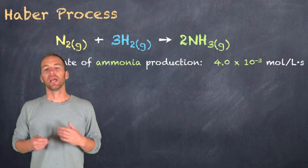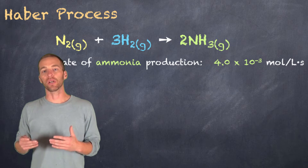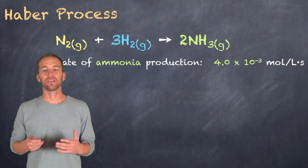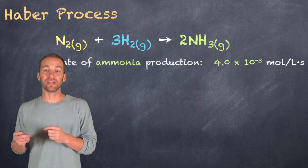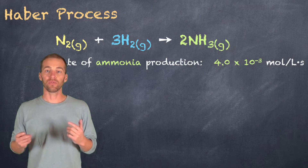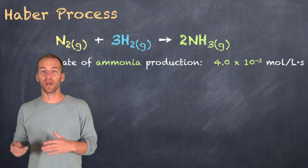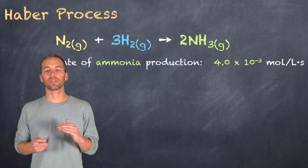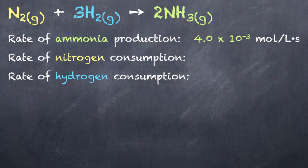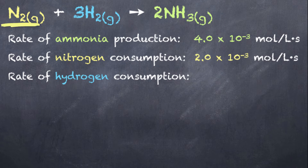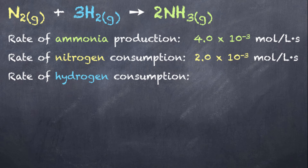If we know that rate and we know the mole ratio, we can look at the relationship between the number of moles of reactants and products. If we know the rate of any one reactant or product, we can use the mole ratio to figure out the rate of consumption or production of anything else in that reaction. For nitrogen, you get half the consumption rate relative to ammonia, because it's a 1-to-2 mole ratio. For hydrogen, you get 1.5 times that of ammonia production, because it's a 3-to-2 ratio.